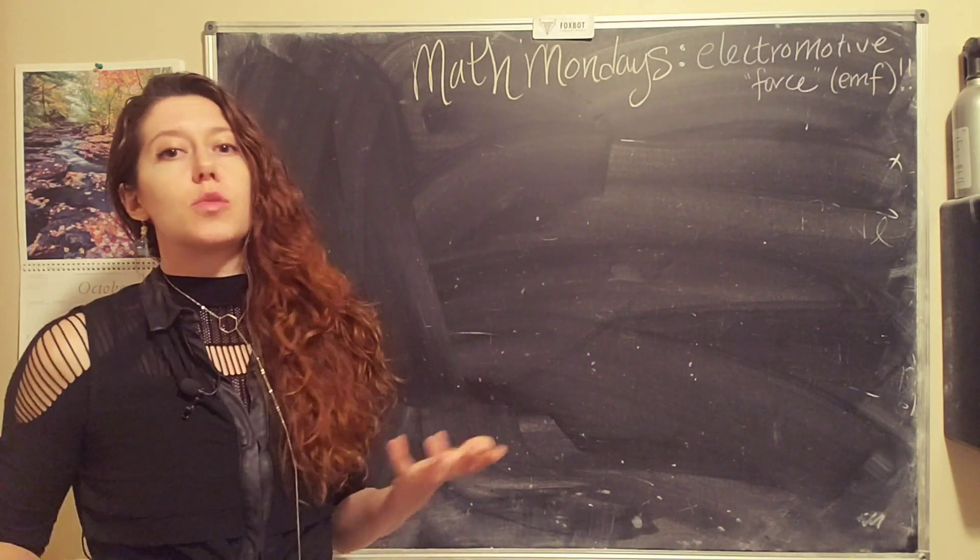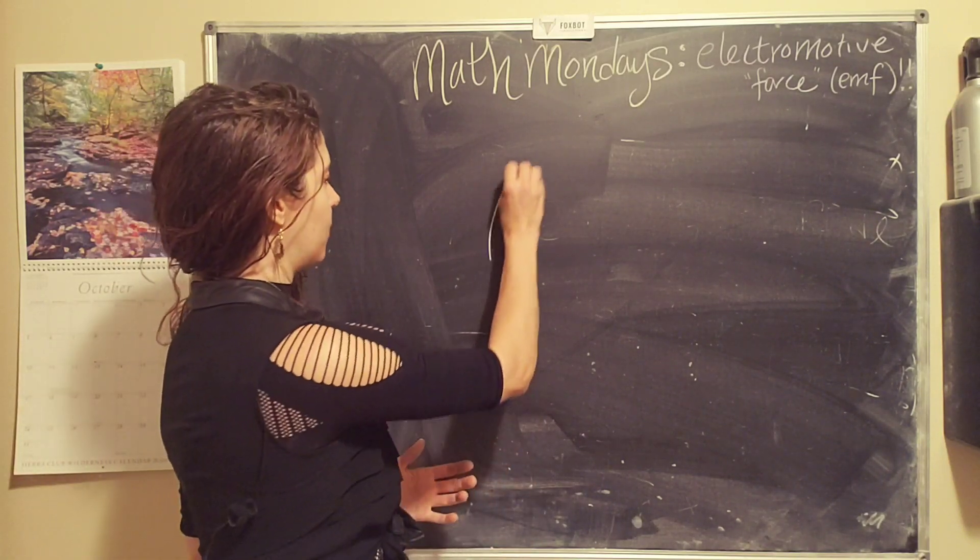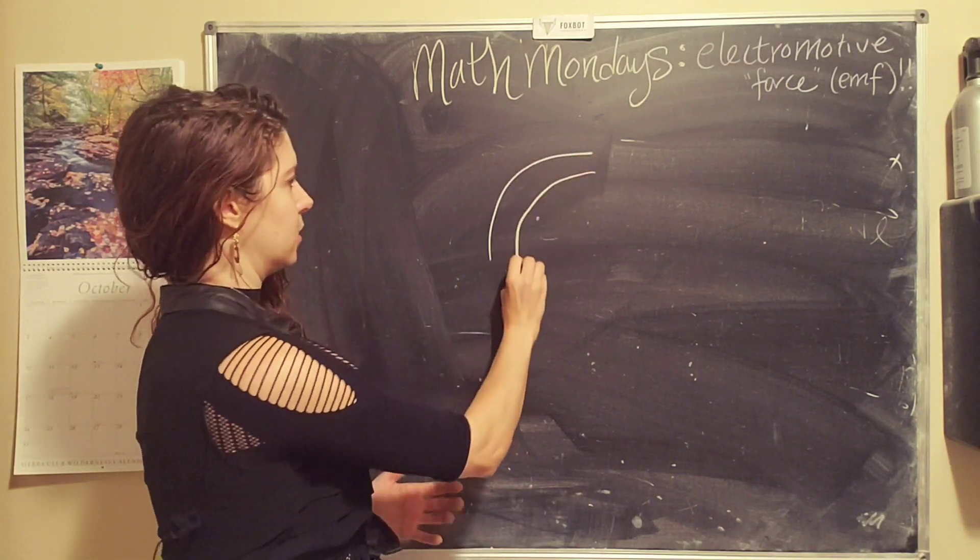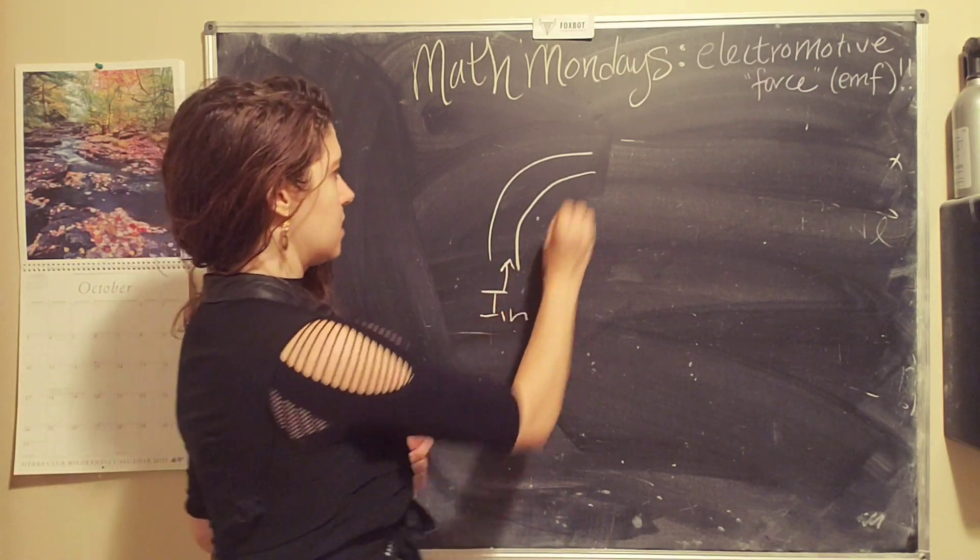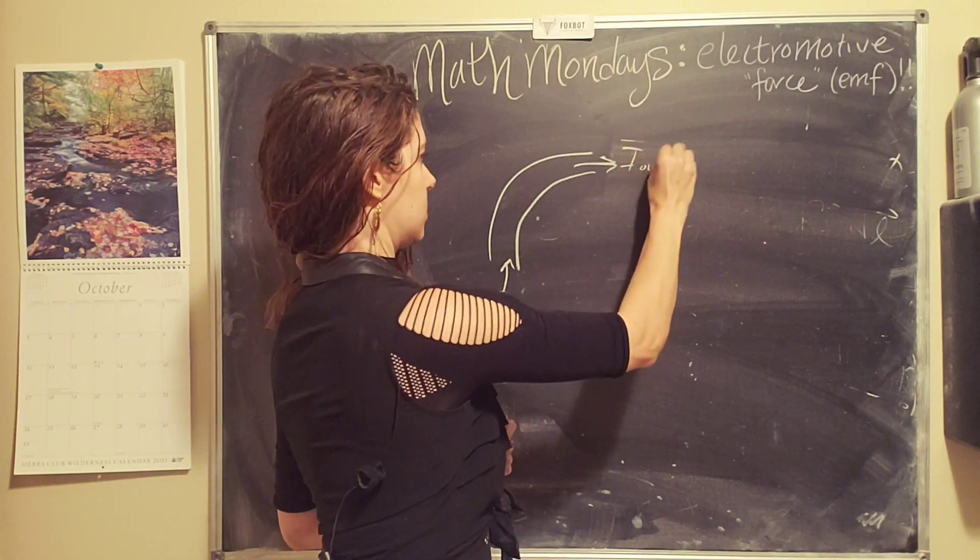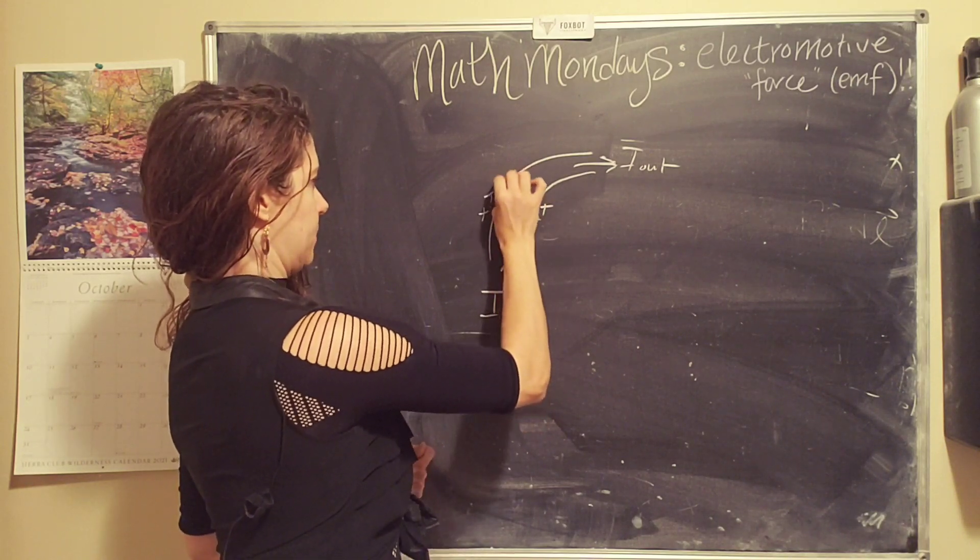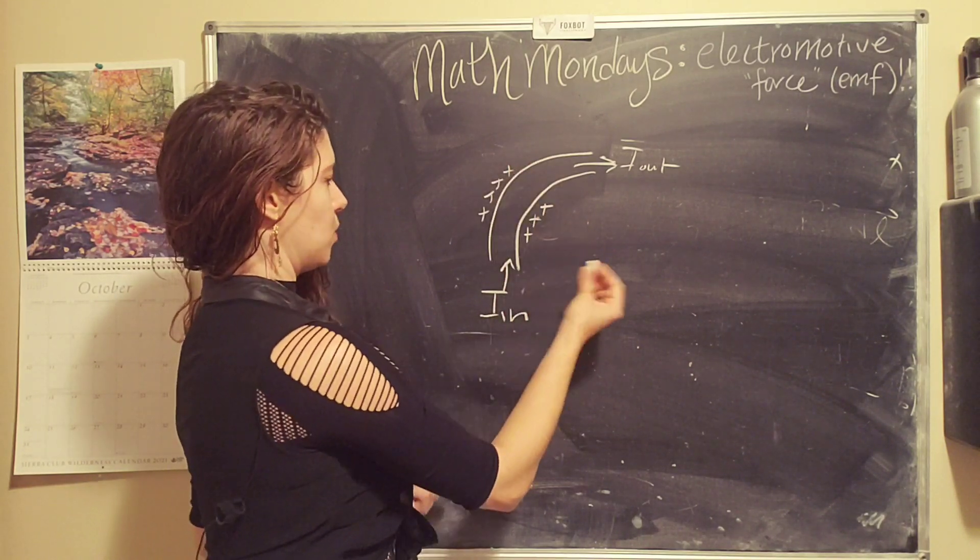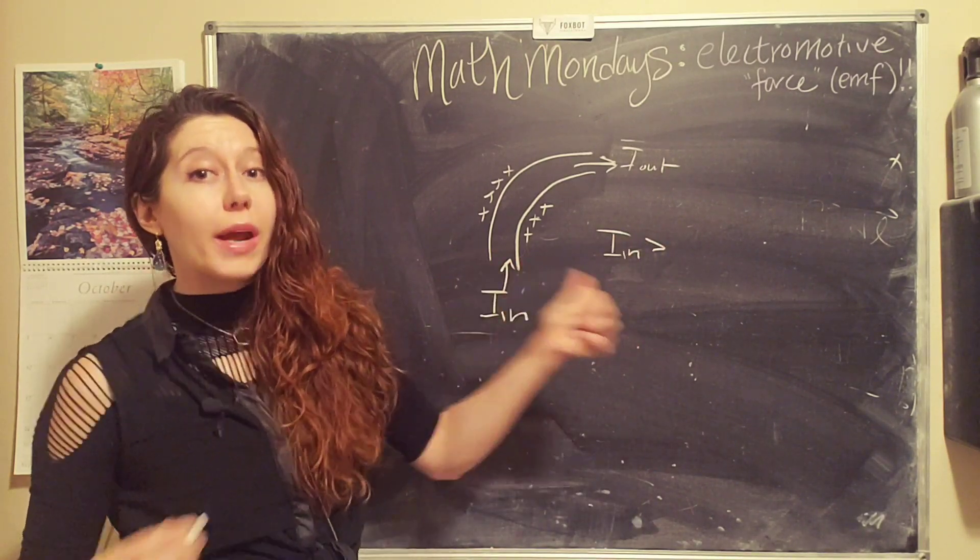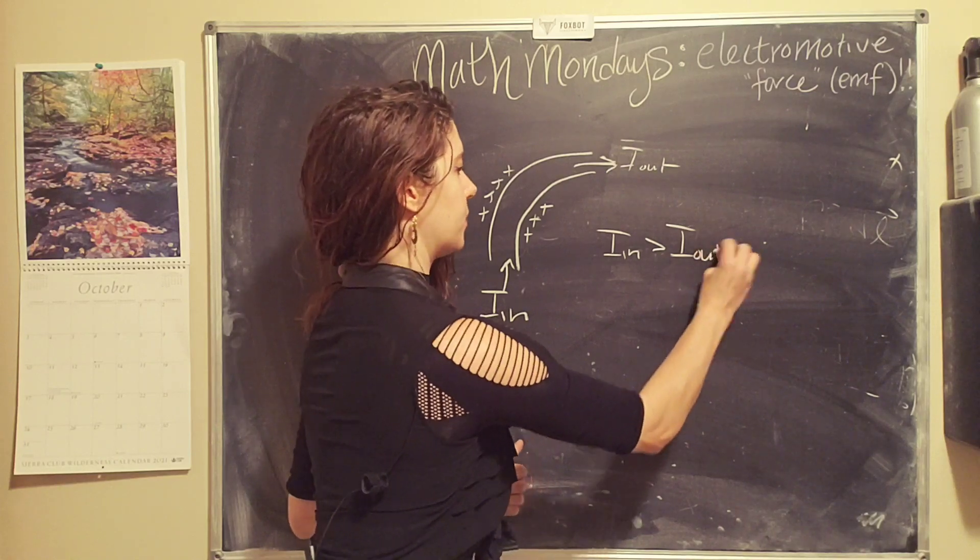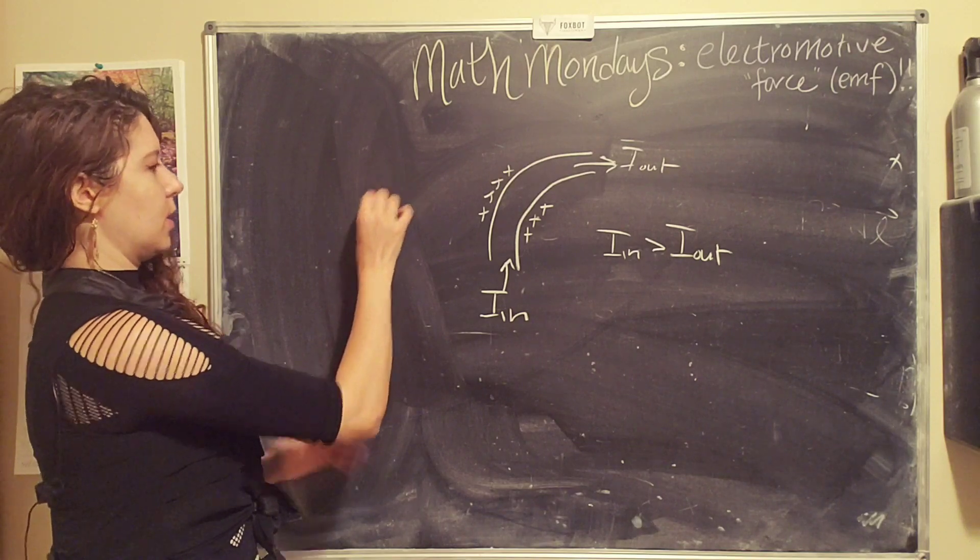All right, so let's assume that current is not the same as it's flowing throughout our circuit. Let's say we have a bend in our circuit and we get a little charge traffic jam. So we have current flowing in and current flowing out, and we get some buildup of charges. So that the current flowing in is greater than the current flowing out.